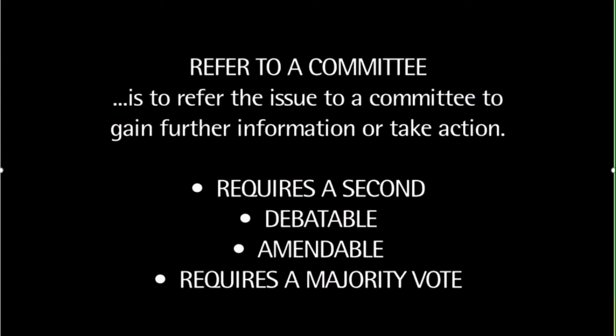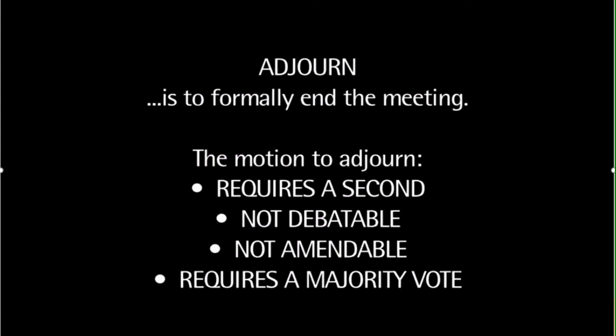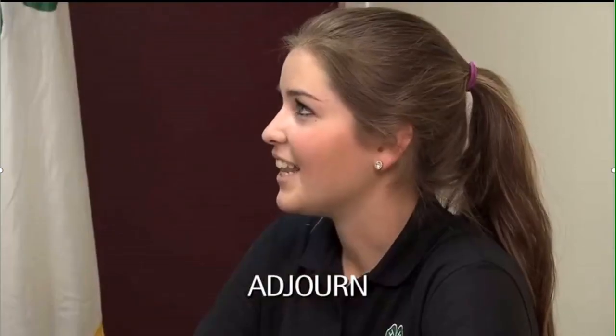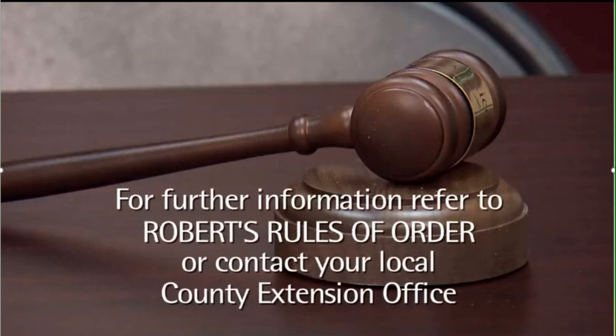To adjourn is to formally end the meeting. The motion to adjourn requires a second, is not debatable, and is not amendable. Adjourning a meeting requires a majority vote. In the demonstration, a member moves to adjourn, the motion is seconded and passes, and the meeting is adjourned. The motions presented in this video are the most common motions in parliamentary procedure and provide a foundation on which parliamentary procedure skills may be built. For further information, obtain the latest edition of Robert's Rules of Order or contact your local county extension office.